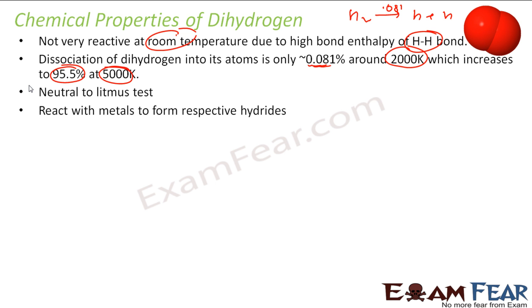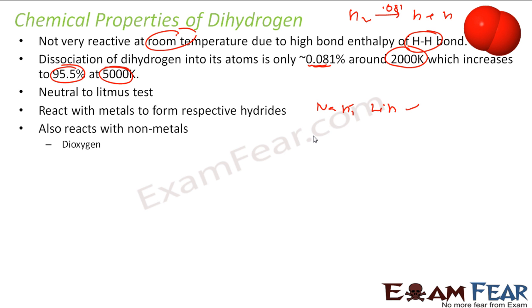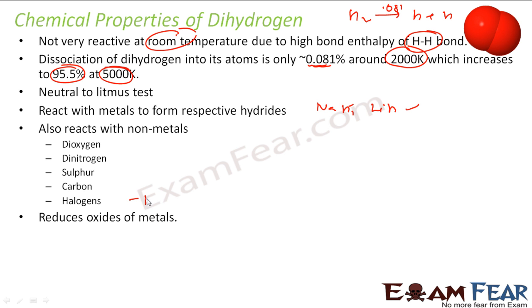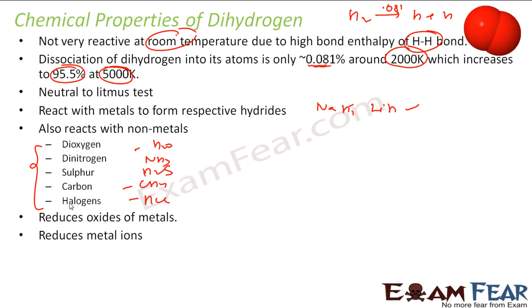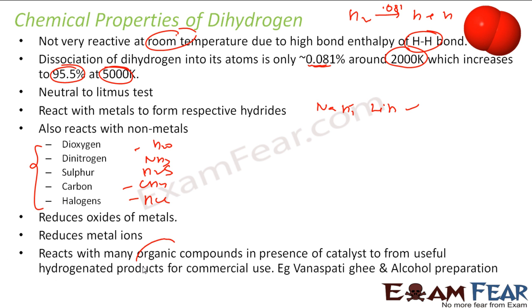It reacts with metals to form hydrides — for example, sodium hydride. It also reacts with non-metals: it reacts with di-oxygen, di-nitrogen, sulfur, carbon, and halogens, giving products such as HCl, CH₄, H₂S, NH₃, and H₂O. It reduces oxides of metals and metal ions. It also reacts with many organic compounds in the presence of catalysts to form a lot of products.